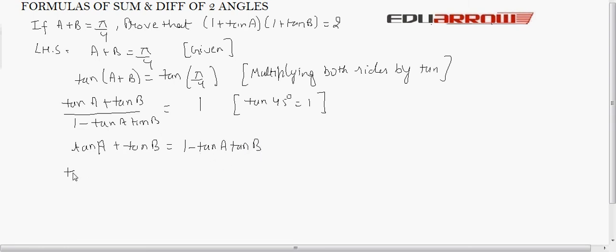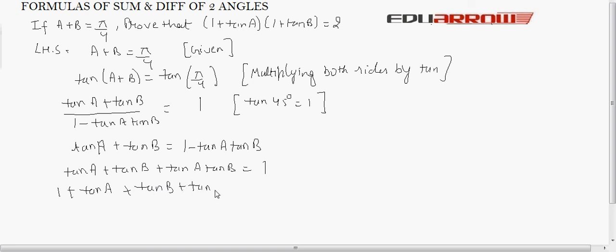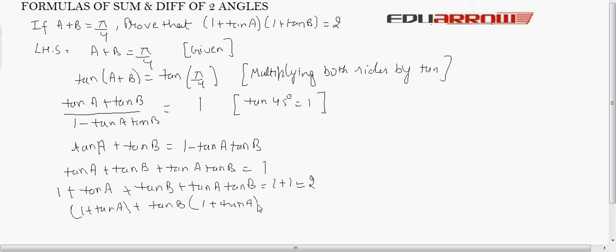By cross-multiplying we get tan A plus tan B equals 1 minus tan A tan B, so tan A plus tan B plus tan A tan B equals 1. Adding 1 to both sides gives 1 plus tan A plus tan B plus tan A tan B equals 2. Factoring, this becomes (1 + tan A)(1 + tan B) equals 2, which equals the right-hand side.